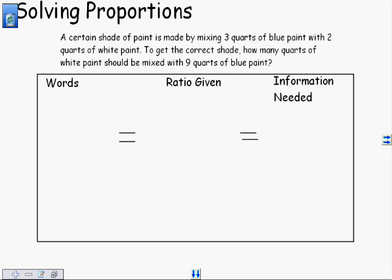A certain shade of paint is made by mixing three quarts of blue paint with two quarts of white paint. To get the correct shade, how many quarts of white paint should be mixed with nine quarts of blue paint?